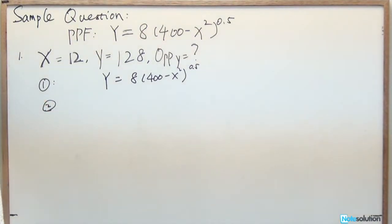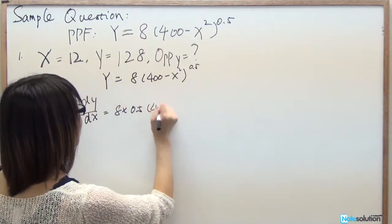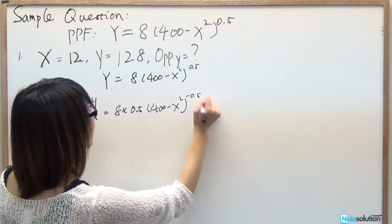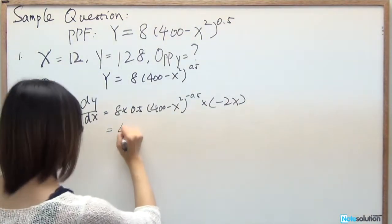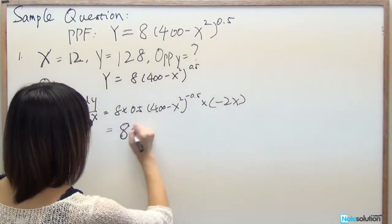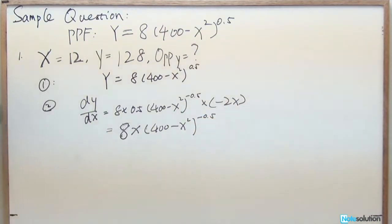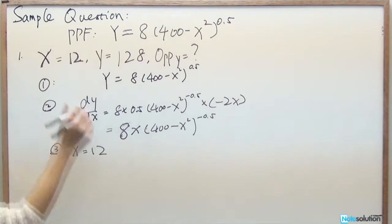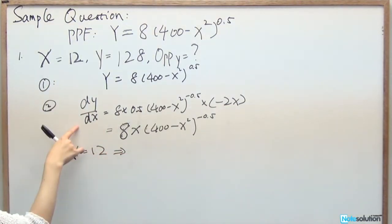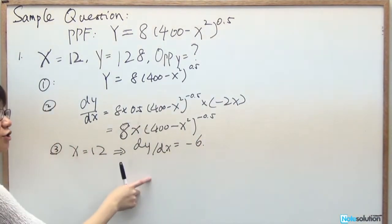To solve, first derive dY/dX from the PPF function. dY/dX equals 8 times 0.5 times (400 minus X²) to the power of negative 0.5 times negative 2X, which simplifies to negative 8X times (400 minus X²) to the power of negative 0.5. Substituting X equals 12, dY/dX equals negative 6.